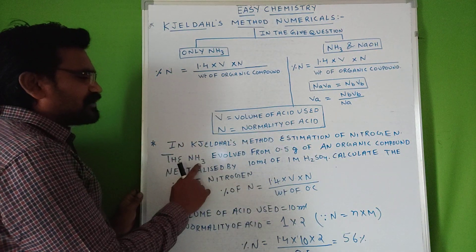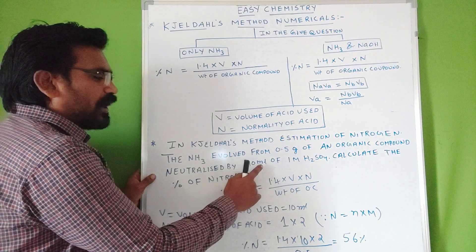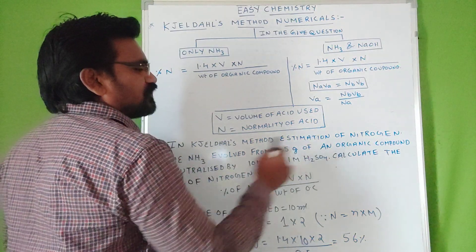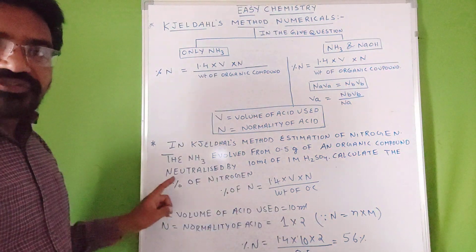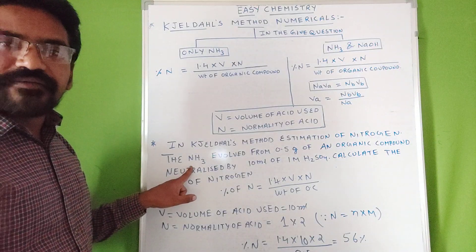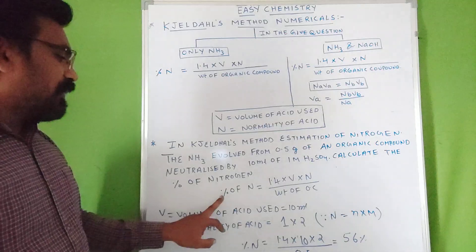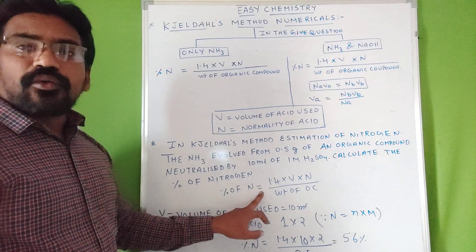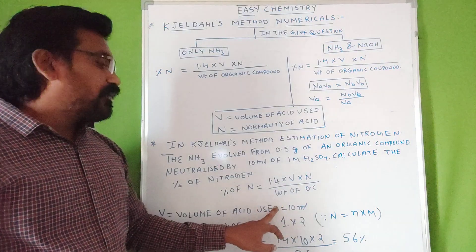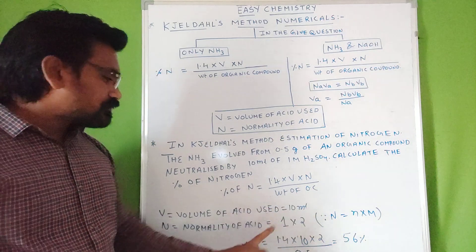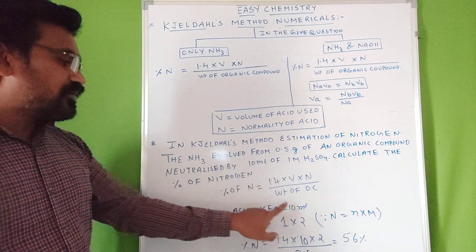Let's see one example. In Jeldahl's method estimation of nitrogen, the NH3 evolved from 0.5 grams of an organic compound is neutralized by 10 ml of 1M H2SO4. Calculate the percentage of nitrogen. Here only NH3 is present, so we use the formula: percentage of nitrogen = 1.4 × volume of acid used × normality ÷ weight of organic compound. Volume of acid used is 10 ml.